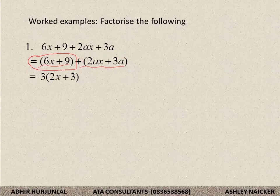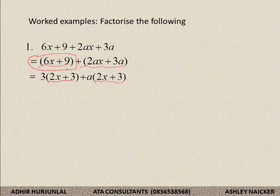Now let's consider the second part: 2ax plus 3a. The common factor is a. If I take out a from here and from here, I am left with 2x plus 3. You would notice that this bracket and that bracket are exactly the same, which means I remove 2x plus 3 as common factor, and in my second bracket I write down whatever I have left. When you use this method of grouping, the brackets must be the same. If the brackets are not the same, you might have made an error — go back and check. I remove 2x plus 3 as common factor and I am left with 3 plus a. That is factorization by grouping.